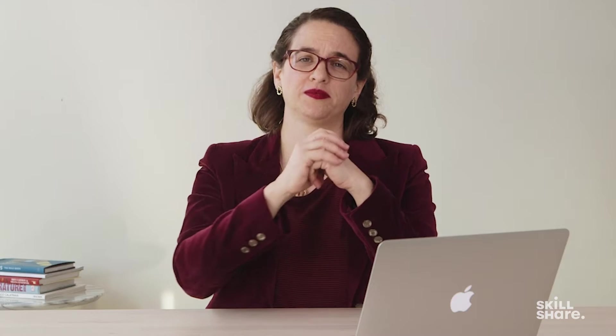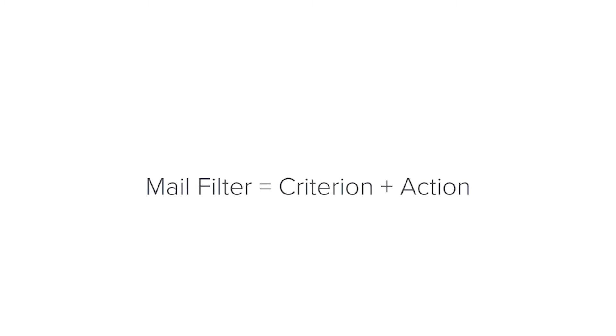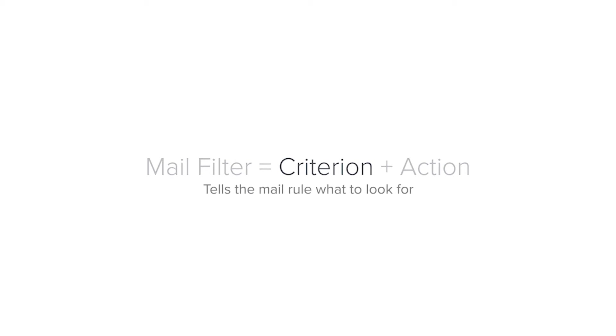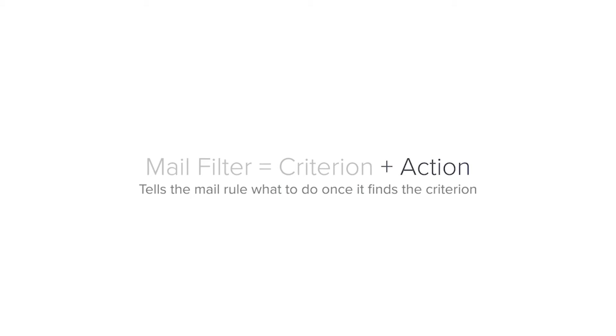Otherwise, you're going to have to recreate the same set of rules on your phone and on your computer. A mail filter consists of two pieces: a criterion and an action. The criterion or criteria are the parts of the rule that tell it what to look for — for example, look for every email that includes the word "unsubscribe" or look for every email that comes from Expedia. And the action tells the mail rule what to do once it finds a message that meets your criteria — for example, when you find an email that contains the word "unsubscribe," file it in the folder called newsletters.